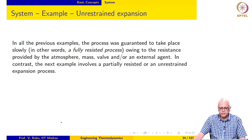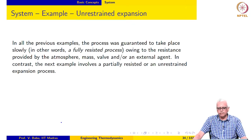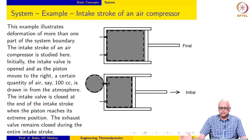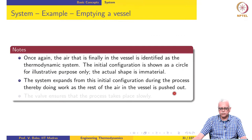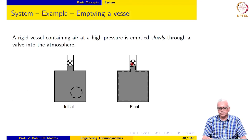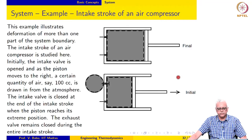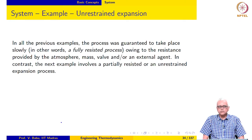In all the previous examples, the process was guaranteed to take place slowly — in other words, it was a fully resisted process — owing to resistance provided by the atmosphere, the mass of the piston, the valve, or an external agent. In contrast, what we are going to look at next is an example involving a partially resisted or unrestrained expansion process. Even if the process is partially resisted, the boundaries and properties at intermediate time instances will not be known unambiguously. Any process that can be analyzed must be a fully resisted process.